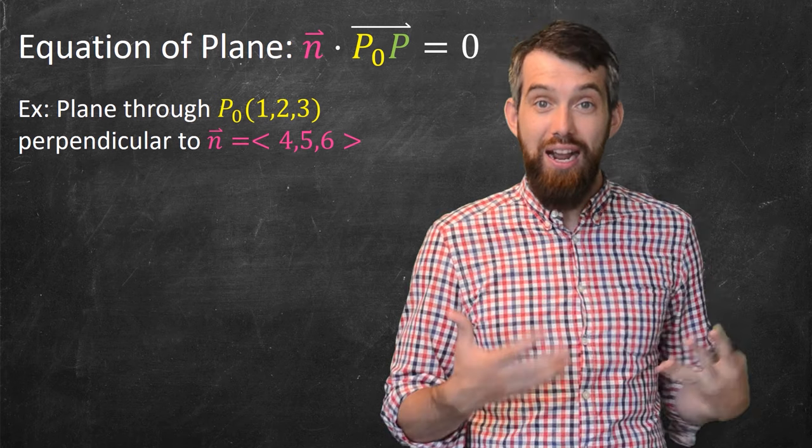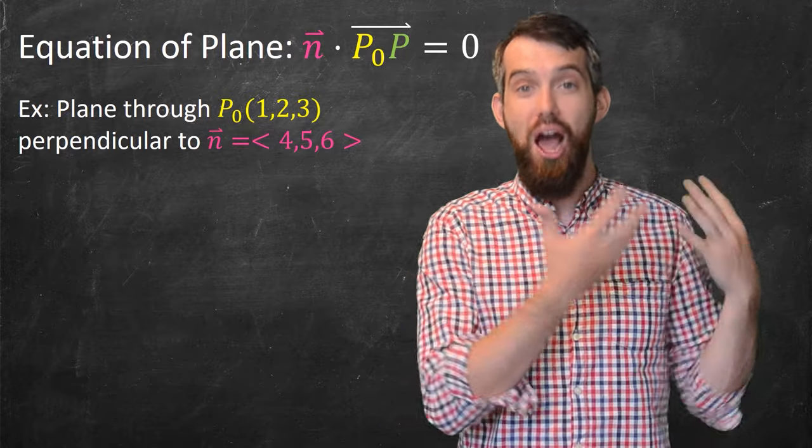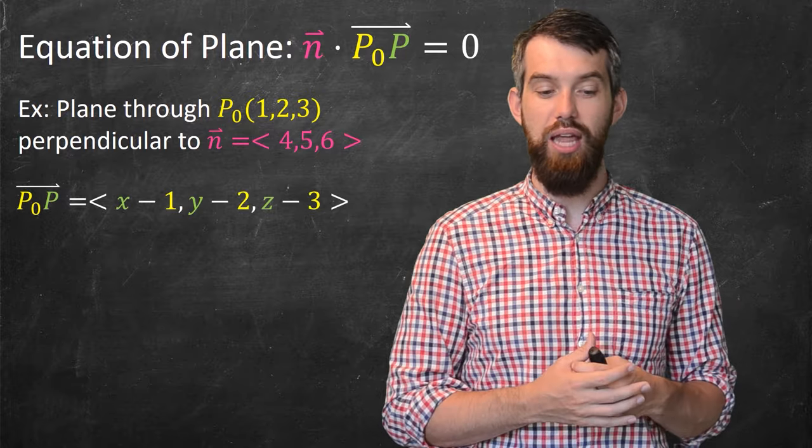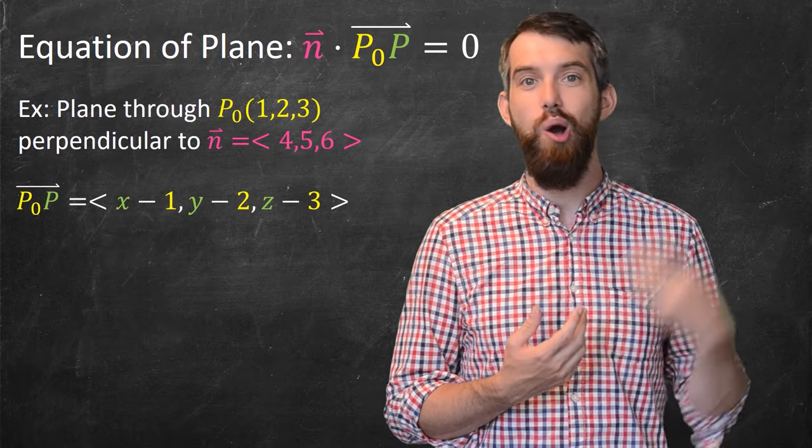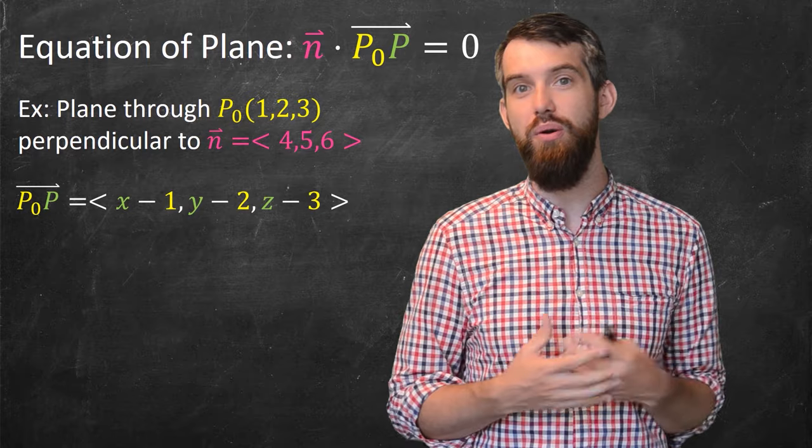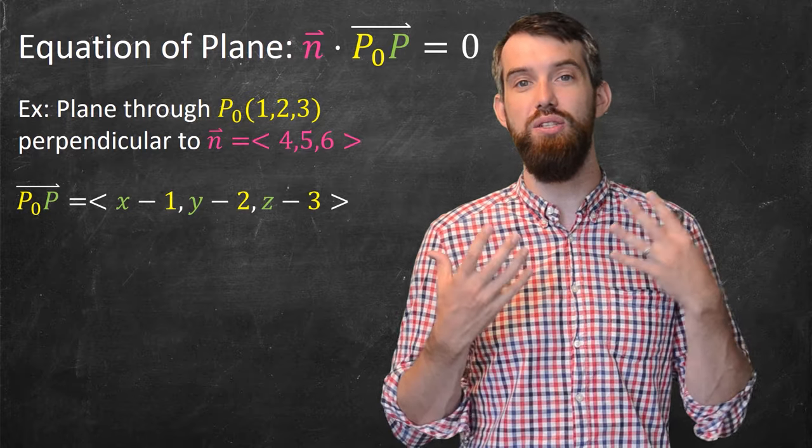So if I take the vector that goes from P₀ out to P, what this is going to look like is, well, in its first component, it's going to be x minus 1, the first component of P₀, y minus 2, the second component, and then finally z minus 3.